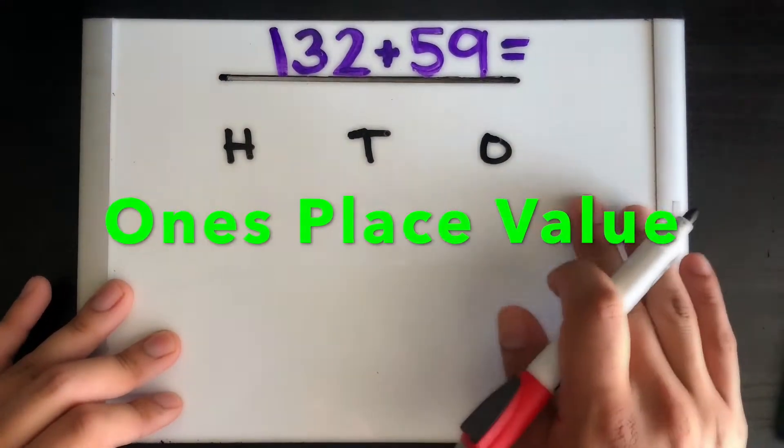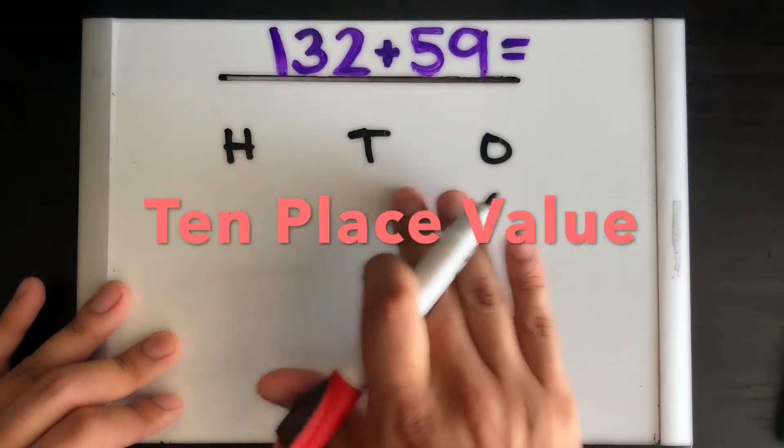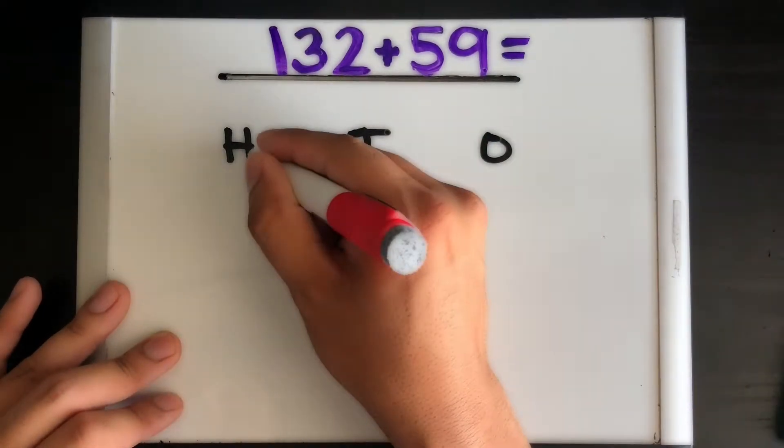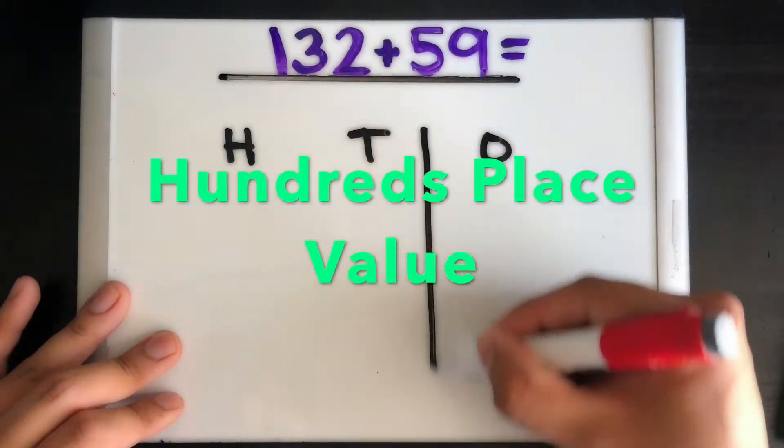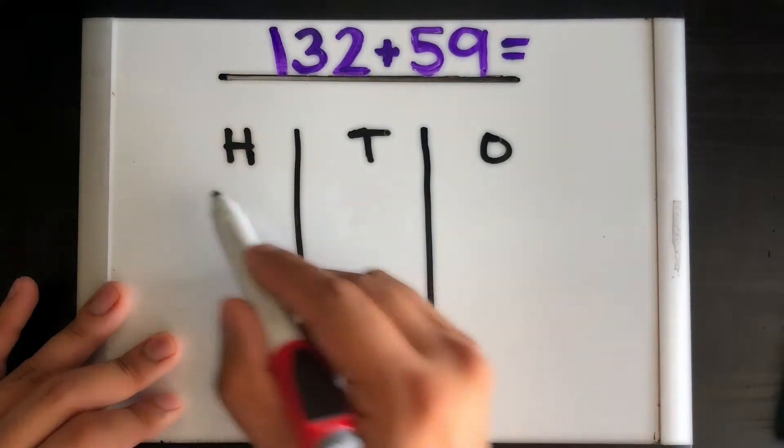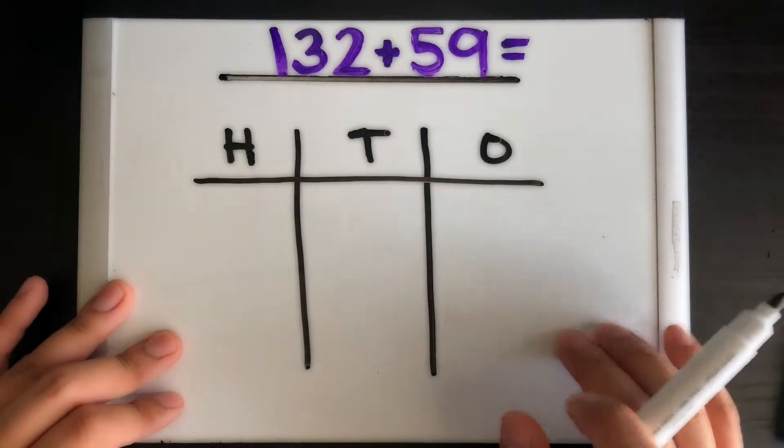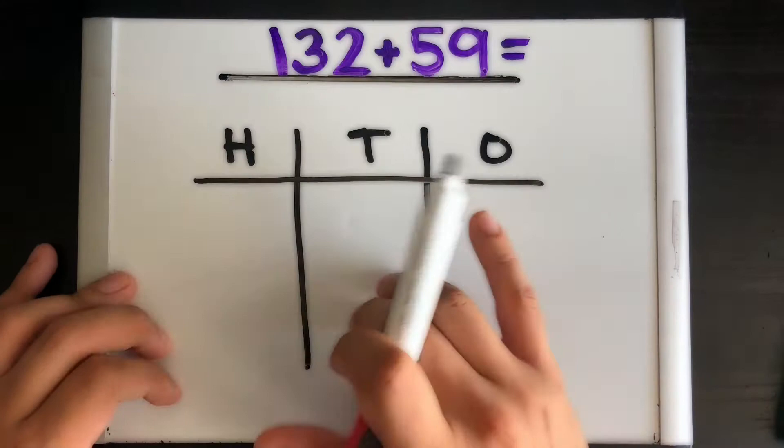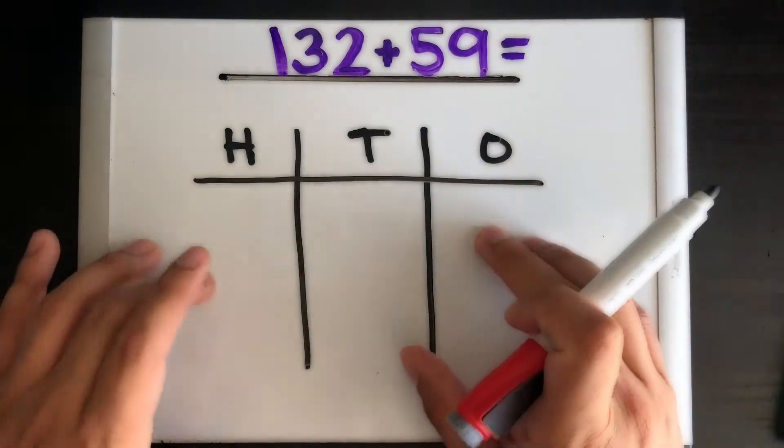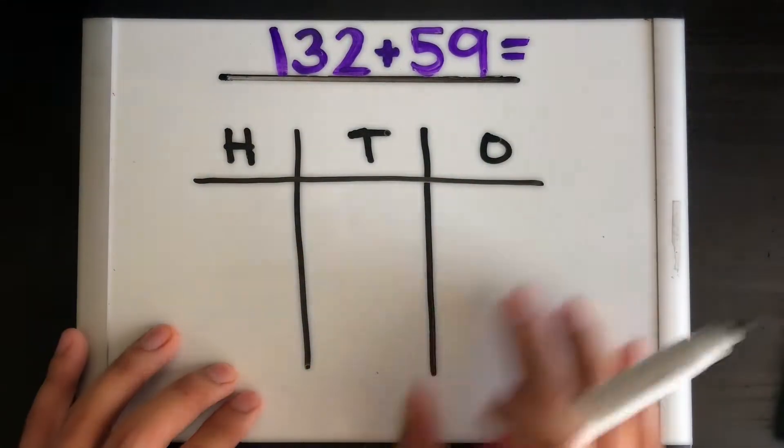Okay, the O represents the ones place, the T represents the tens place, and the H represents the hundreds place. So go ahead, and I like to draw some lines like this to keep it nice and organized and clean, that way I'm not doing sloppy jalopy work.